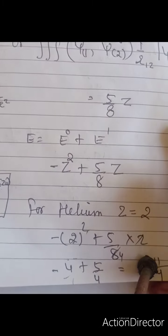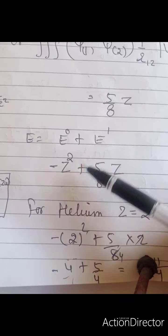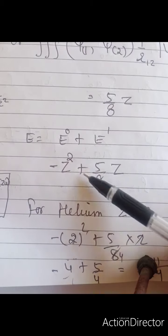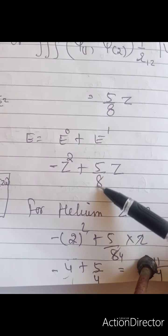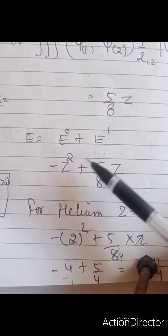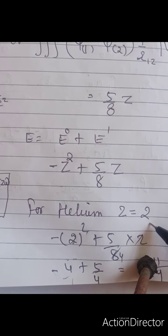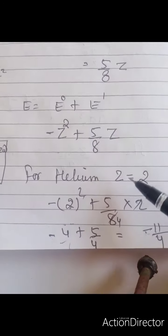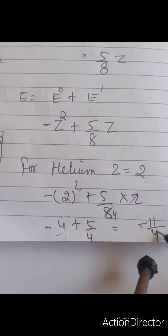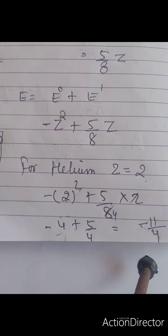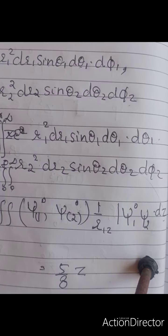The total energy is E⁰ + E¹, where E⁰ = minus Z² and E¹ = 5/8·Z. For the helium atom, Z = 2. Substituting this value gives minus 11/4. This is how we apply perturbation theory to the helium atom, or more generally to more complicated multi-electron systems.